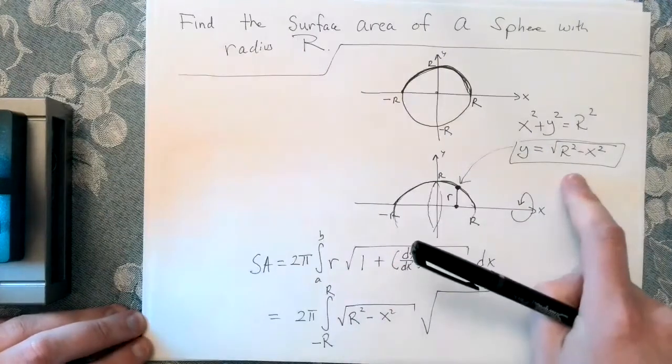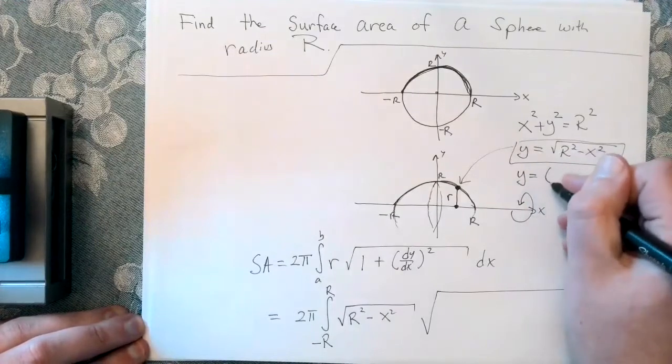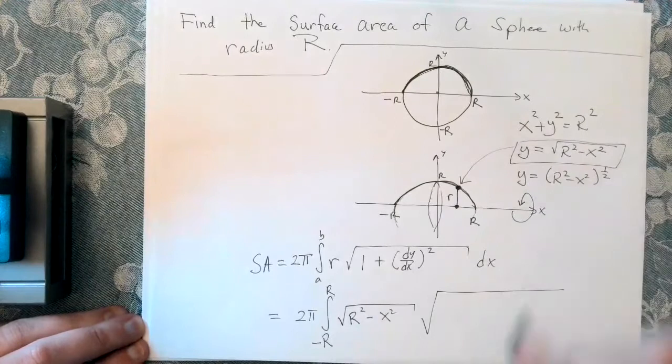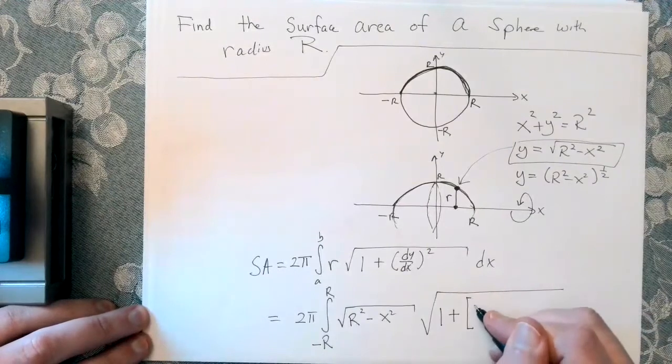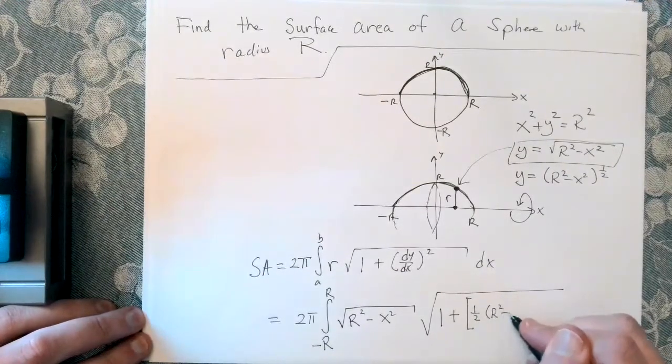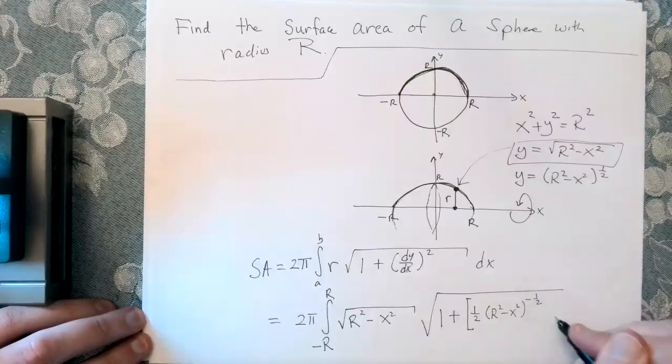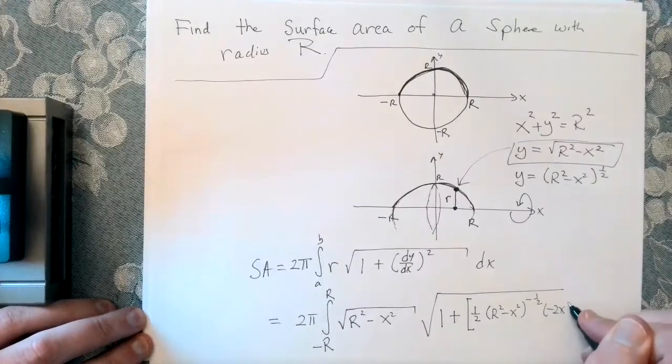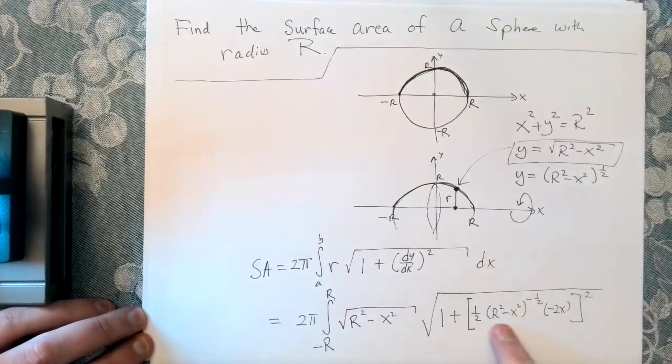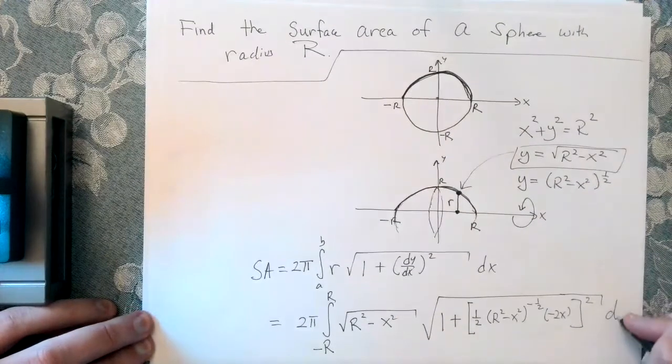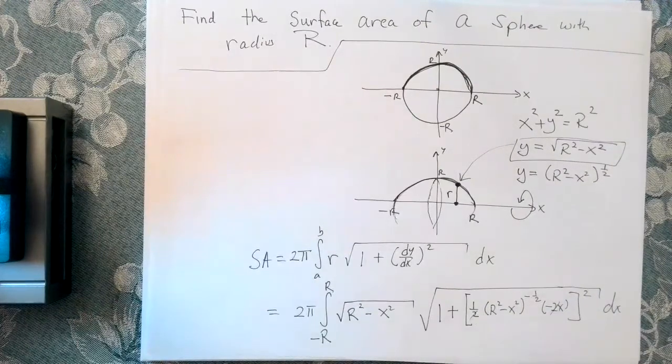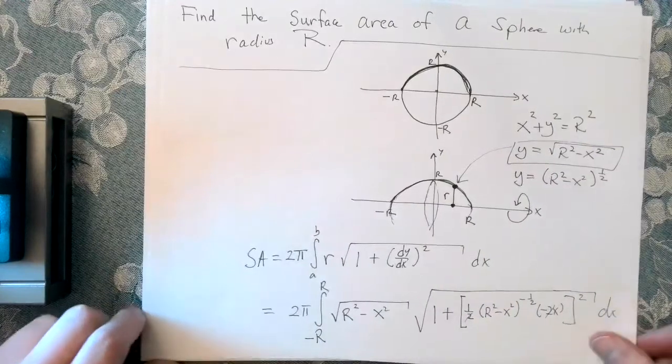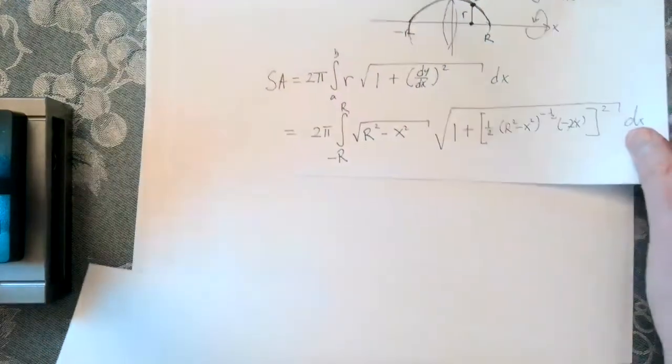And then I need 1 plus the derivative squared. Well, if I need the derivative, it might be a good idea to rewrite this and look out for chain rule. So the derivative would be 1 half quantity r squared minus x squared to the minus 1 half times by the chain rule minus 2x. There's my derivative squared. So that seems pretty good so far. It looks like the 2s will cancel. And then we can rewrite this.